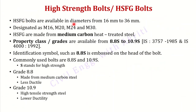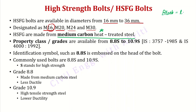HSFG bolts are available in diameters from 16mm to 36mm, designated as M16, M20, M24, M30, and so on. HSFG bolts are made from medium carbon heat treated steel — compared to ordinary black bolts which are made from low carbon steel. Increasing carbon content increases strength. The property class or grade is 8.8S to 10.9S, as given in IS 3757:1985 or IS 4000:1992.